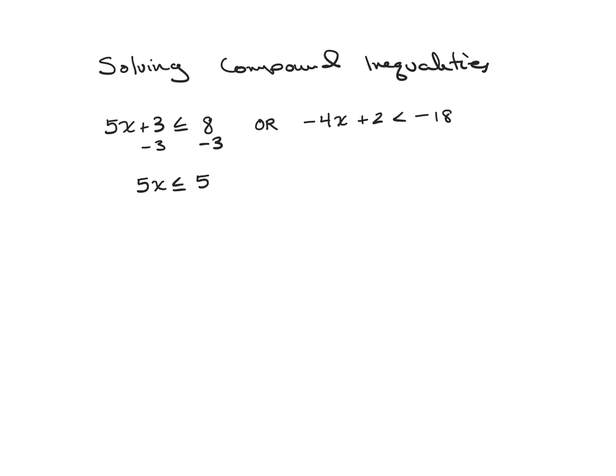The last step is to isolate x. Since the coefficient of x is an integer, I'll use division. I divide by 5 on both sides, and I get x is less than or equal to 1. That first inequality is now done.